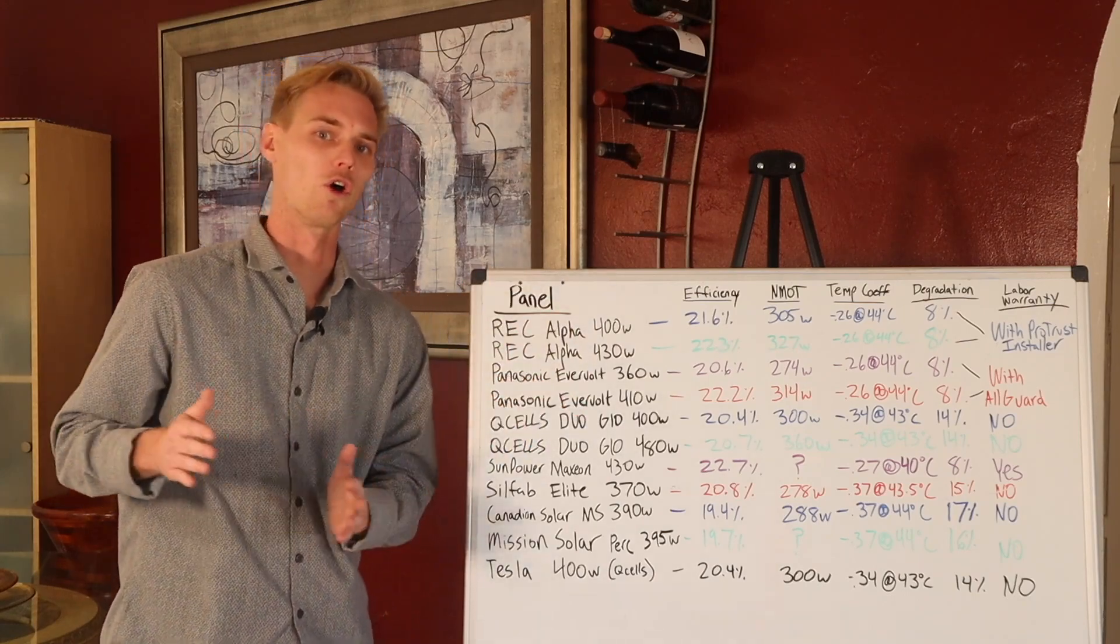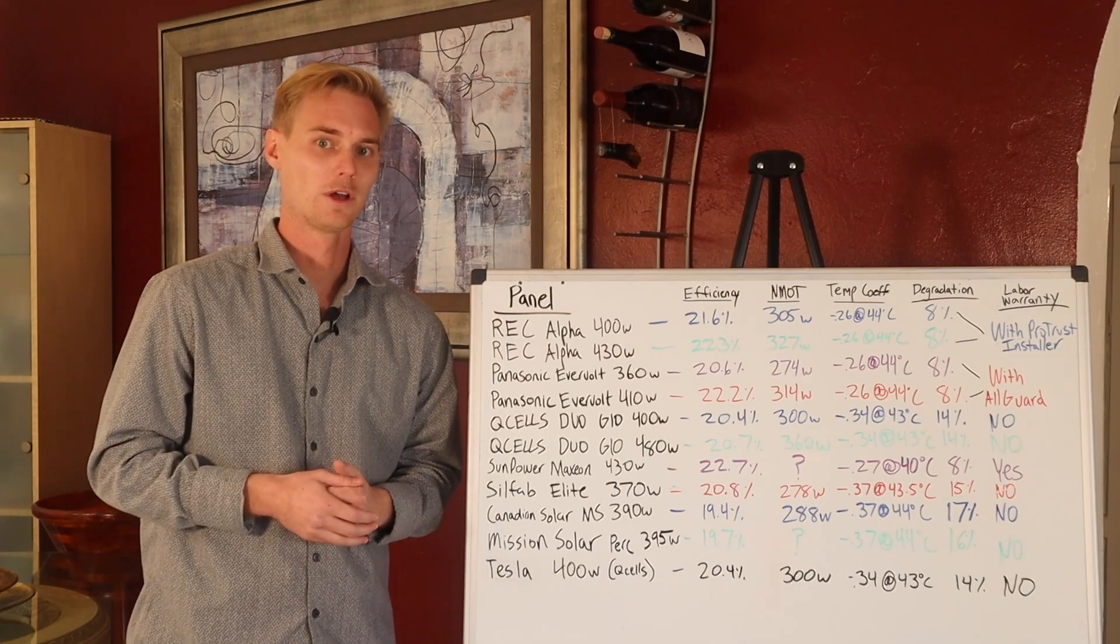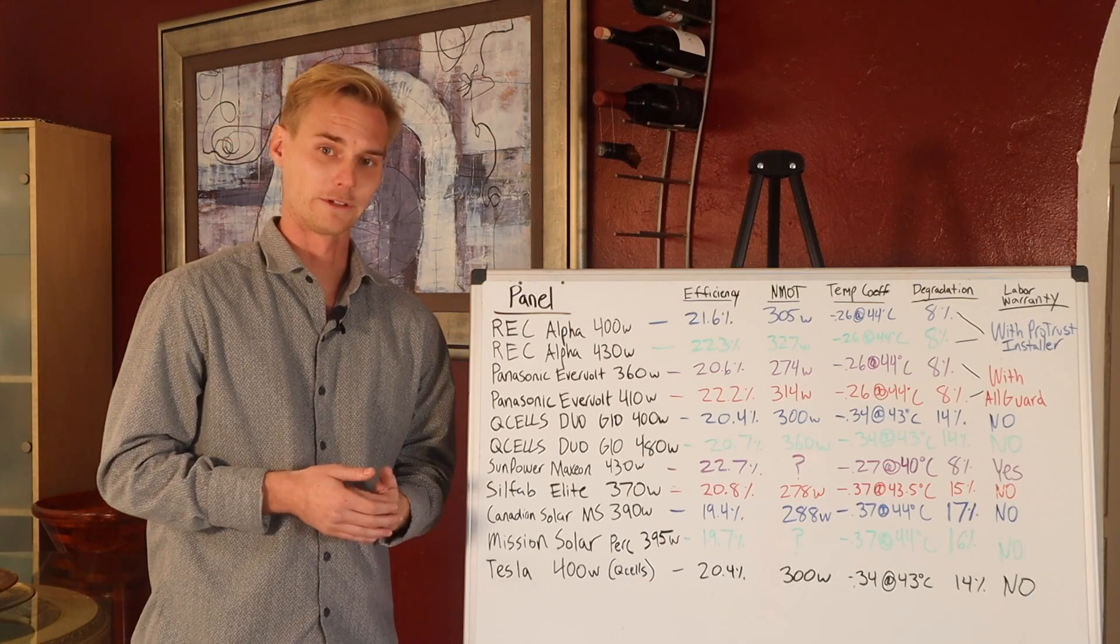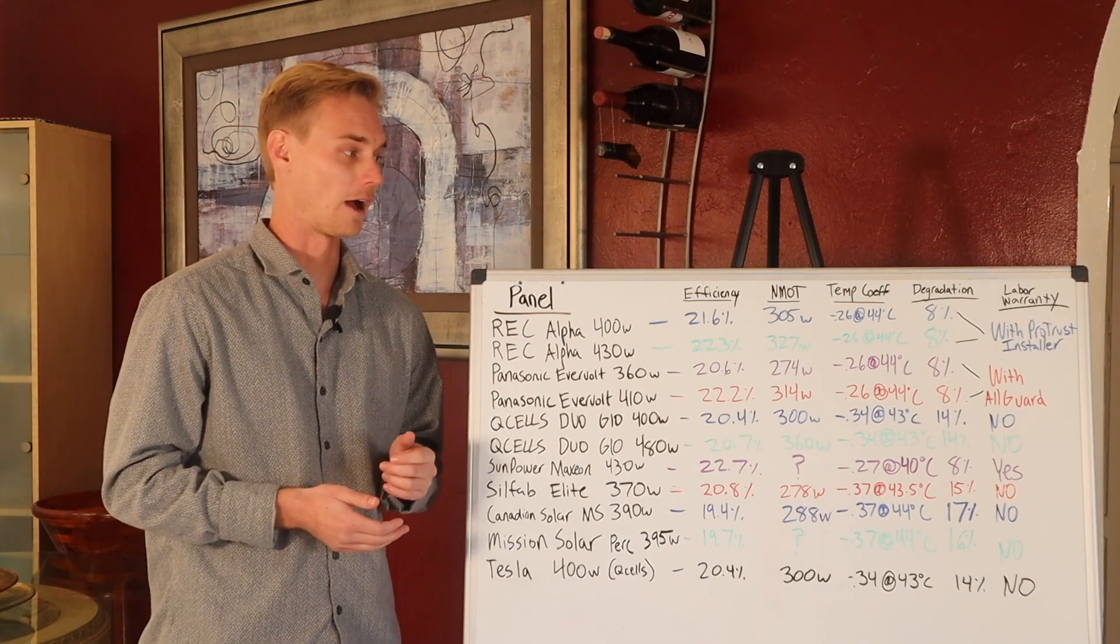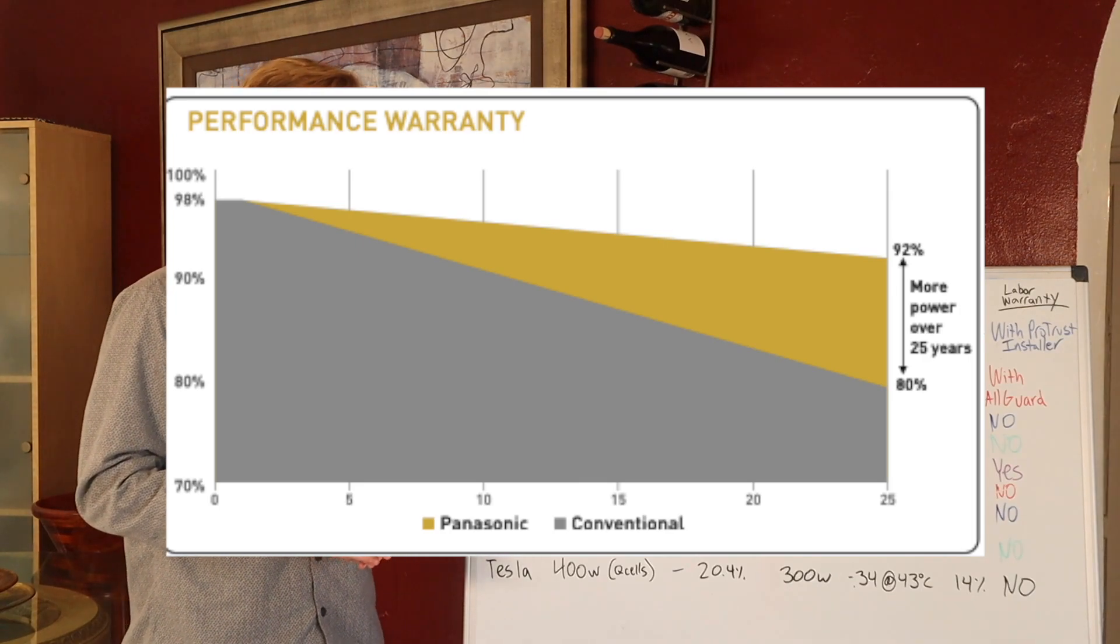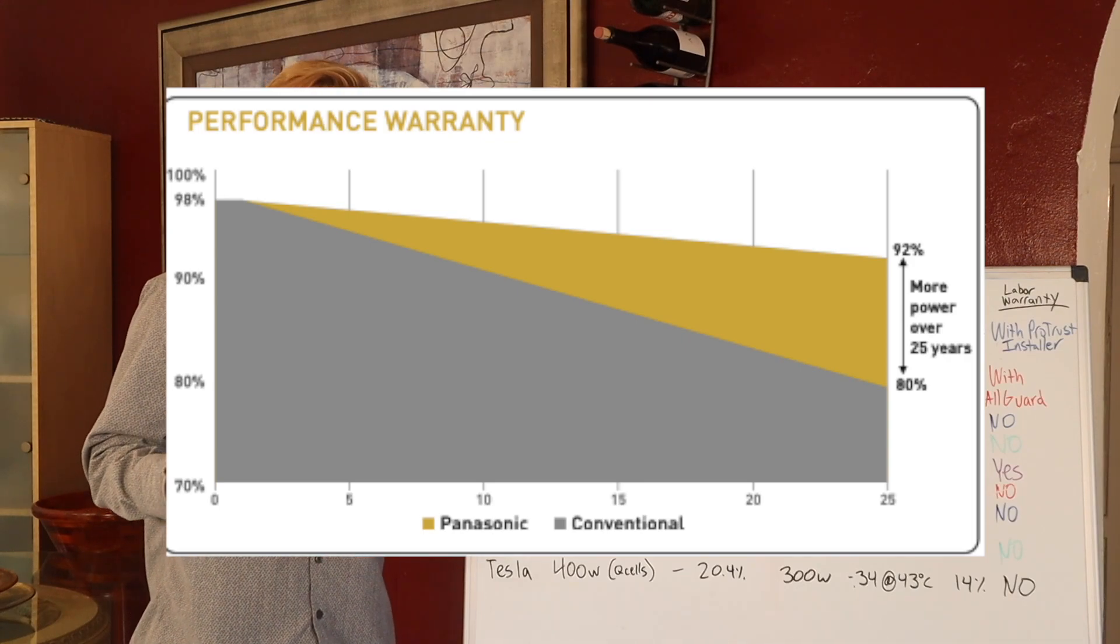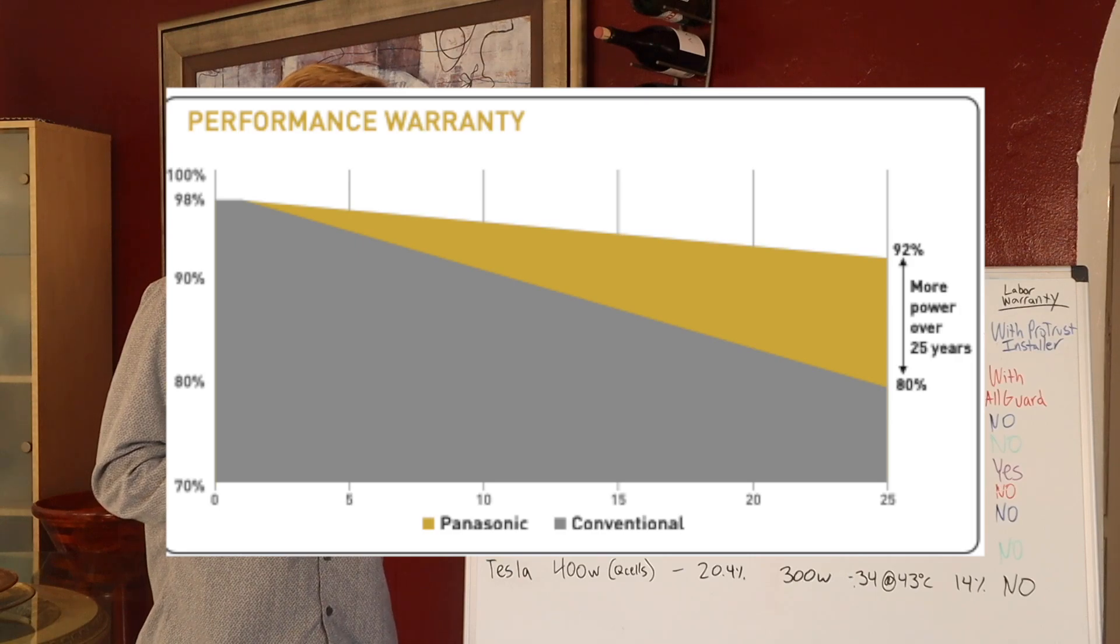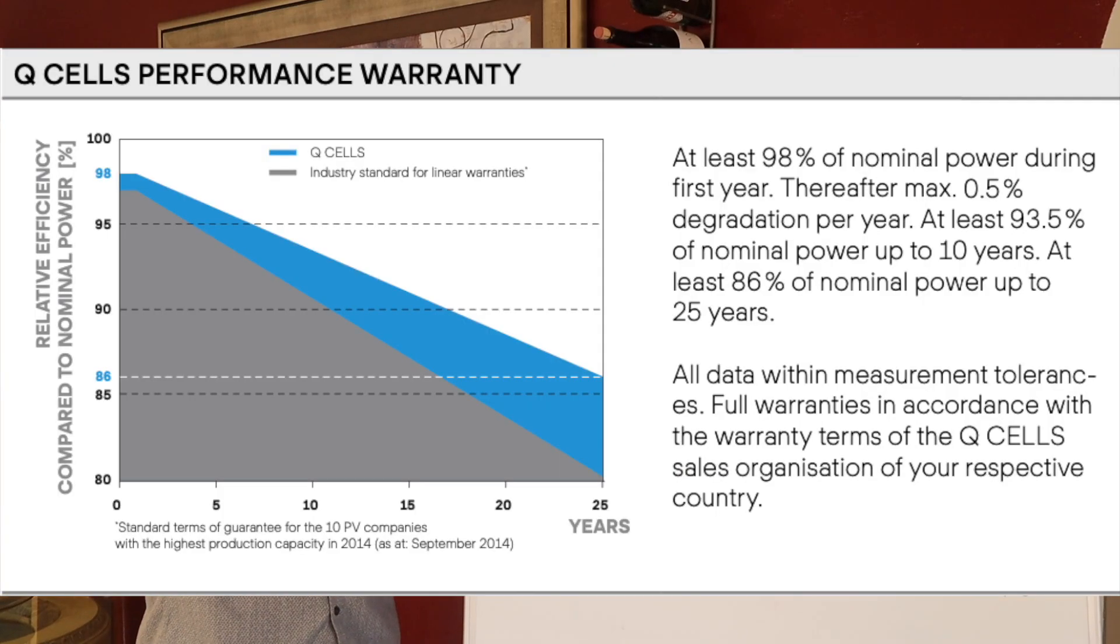Degradation tells us how well over time the panel is going to perform. It used to be 10, 15, 20 years ago to get a panel that degraded less than 10% in 25 years was impossible, but now we have our top premium products degrading less than 10% throughout a 25 year period. The REC, Panasonic, and SunPower panels are going to have the least degradation overall. It's a 92% guarantee at year 25, which is pretty amazing. Q-cells is about a 14% degradation over 25 years.